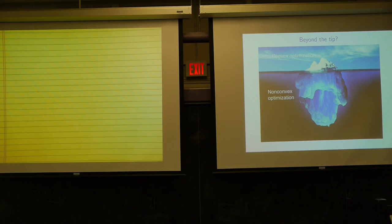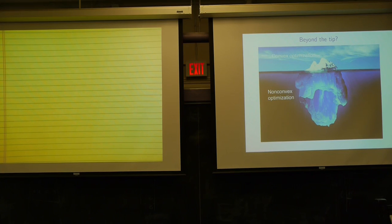We have this section of problems where it's bright and warm and we know how to solve them. We have all these tools — we had lectures about which method to use, and the math is typically very clean. We can characterize things with the KKT conditions. And then below the surface is this gigantic portion of problems that's the non-convex world.